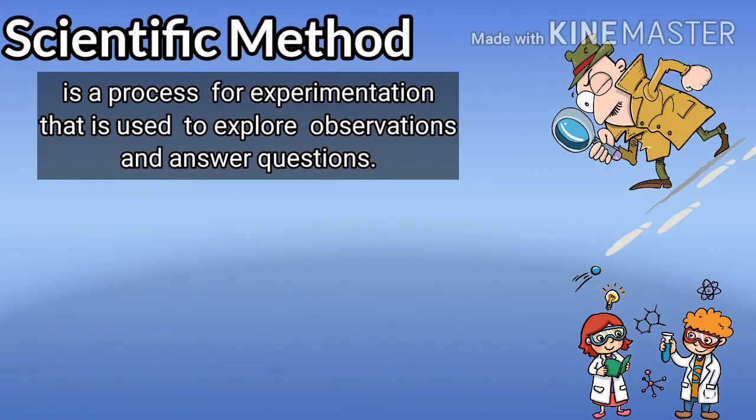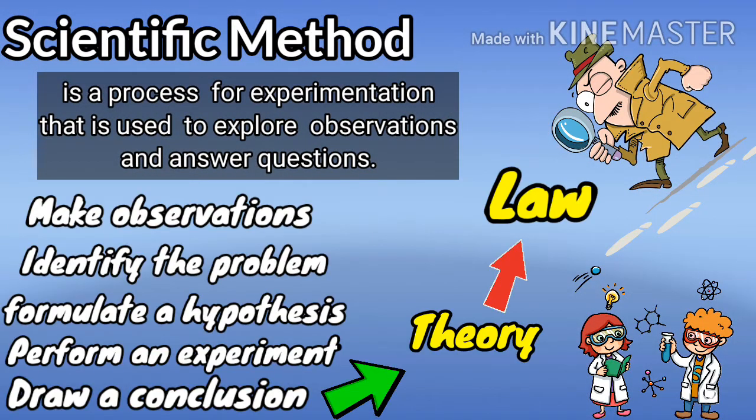Scientific method is a process for experimentation that is used to explore observations and answer questions. The following are the steps for scientific method: make observation, identify the problem, formulate a hypothesis, perform an experiment, draw a conclusion, and identify whether your conclusion is a theory or a law.